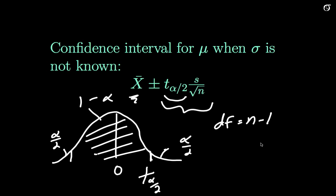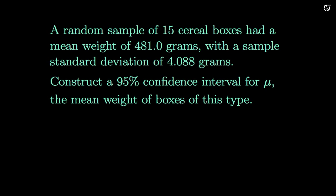So let's look at how this might look in a real problem. A random sample of 15 cereal boxes had a mean weight of 481 grams with a sample standard deviation of 4.088 grams, and we want to construct a 95% confidence interval for mu, the mean weight of boxes of this type. Remember we're assuming a normally distributed population, so we are assuming, if this is reasonable, that these weights are normally distributed. We should investigate that with something like a normal quantile-quantile plot before doing this, but let's say this is a reasonable assumption in this spot.